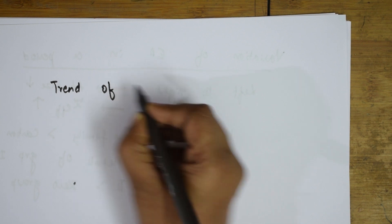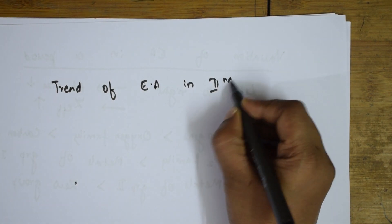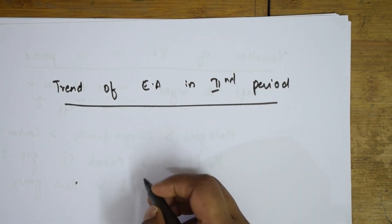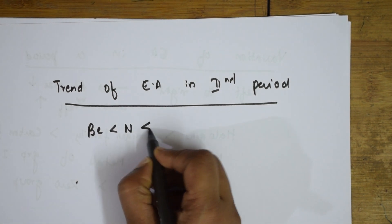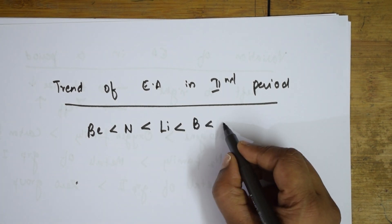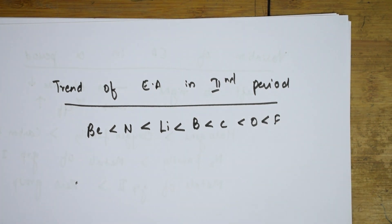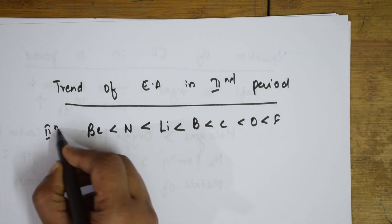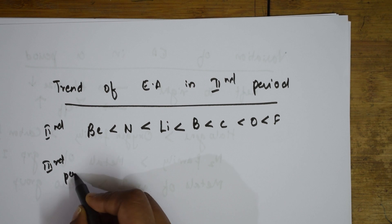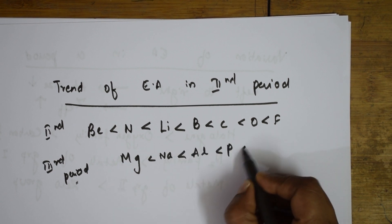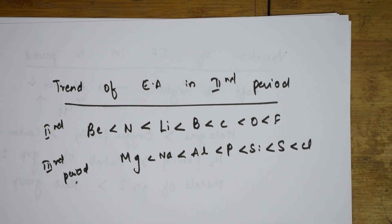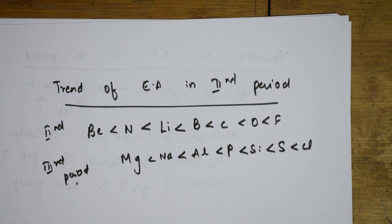For the second period, the electron affinity trend is: beryllium < nitrogen < lithium < boron < carbon < oxygen < fluorine. For the third period: magnesium < sodium < aluminium < phosphorus < silicon < sulphur < chlorine. This is the trend in a period based on atomic size and Z-effective.